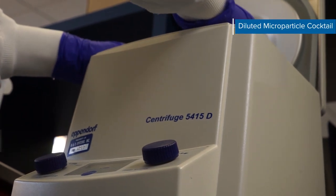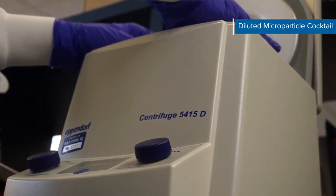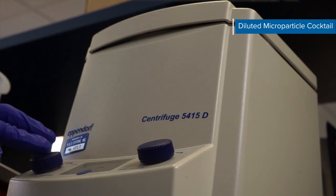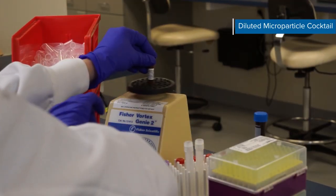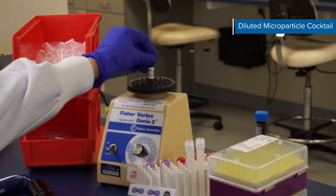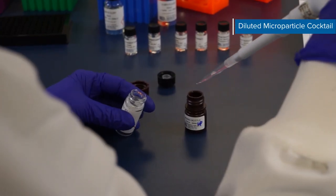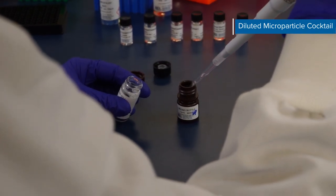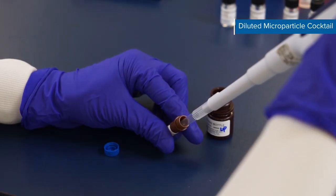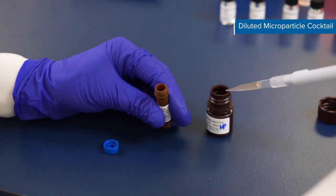To prepare the diluted microparticle cocktail, first centrifuge the microparticle cocktail vial for 30 seconds at 1,000 times the force of gravity. Then gently vortex the vial to resuspend microparticles while making sure not to invert the vial. Finally, dilute the microparticle cocktail using assay diluent RD2-1 in the mixing bottle provided. Refer to your kit booklet for specific volumes and be sure to protect microparticles from light.